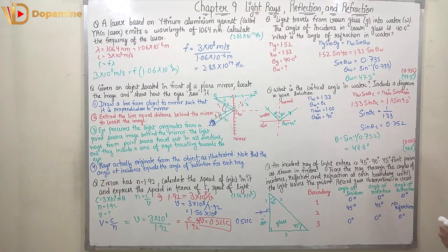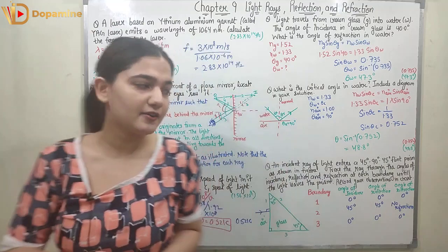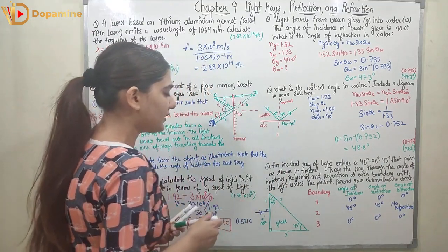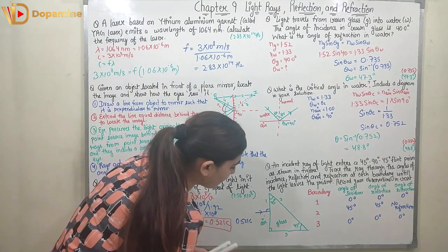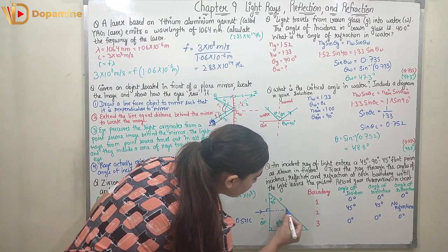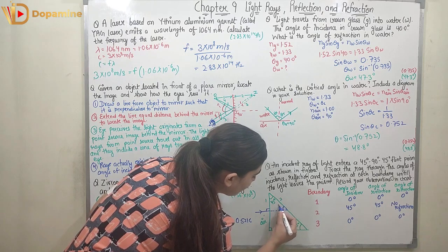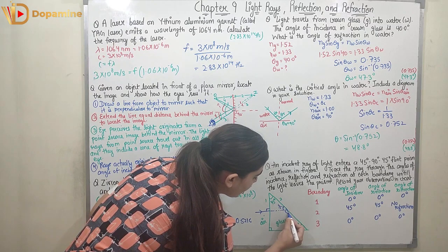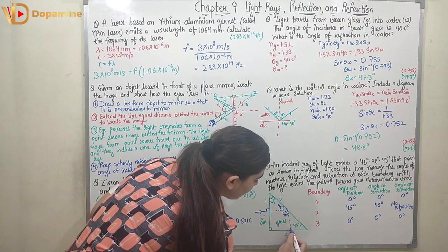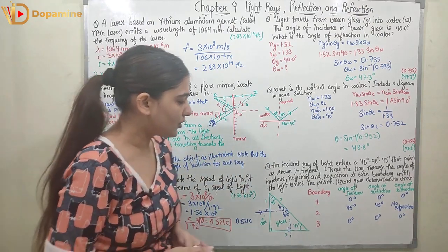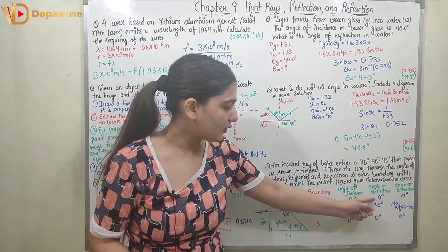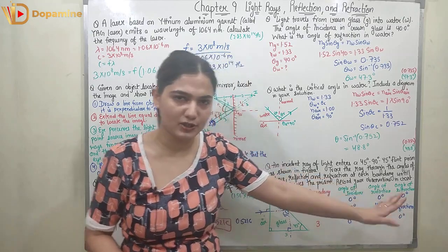Coming to the next question: an incident ray of light enters a 45-90-45 flint prism. Trace the ray through the angles of incidence, reflection, and refraction at each boundary until the light leaves the prism. Light enters and moves inside the prism, hitting boundary 2 at 45°, reflecting at 45°, then reaching boundary 3 at 90°. At boundary 1, the angle of incidence, reflection, and refraction are all 0°, so there is no reflection or refraction.